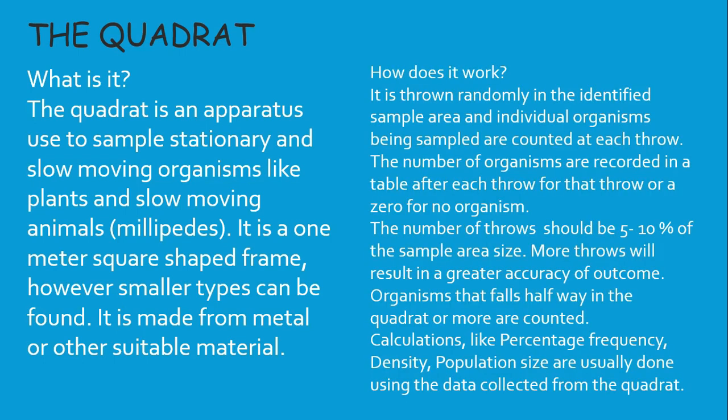It is thrown randomly in the identified sample area and individual organisms being sampled are counted at each throw. The number of organisms are recorded in a table after each throw, or a 0 for no organism. The number of throws should be 5-10% of the sample area size. More throws will result in a greater accuracy of outcome. Organisms that fall halfway in the Quadrat or more are counted.